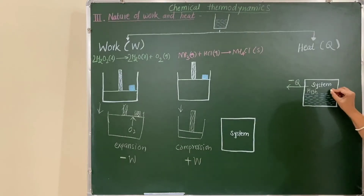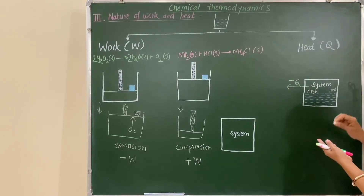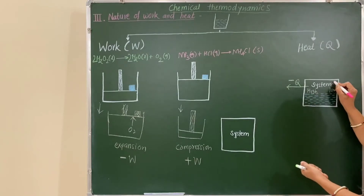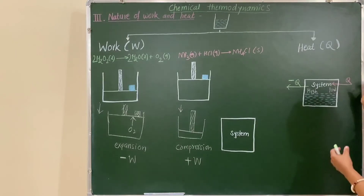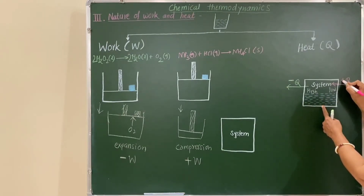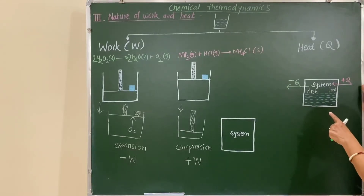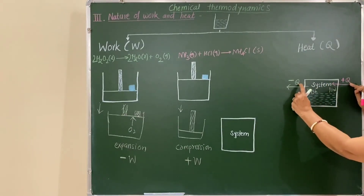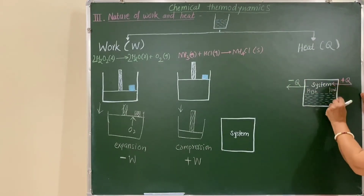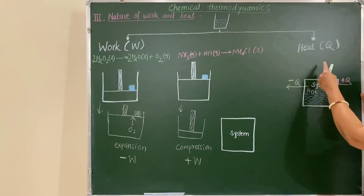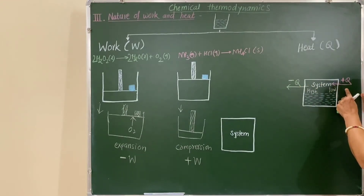Now suppose another case: the system is at a low temperature and the surroundings are at a high temperature. Then the surroundings give energy and the system absorbs the heat. The system absorbs energy in the form of heat, so its temperature increases and its energy increases — therefore it is plus Q. Remember here, when the system exchanges energy in the form of heat, no work is done — the system is closed, no expansion and no compression.